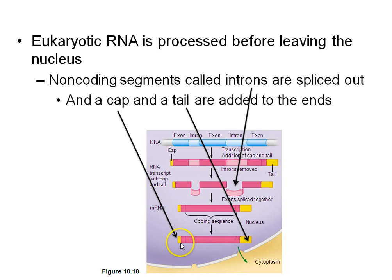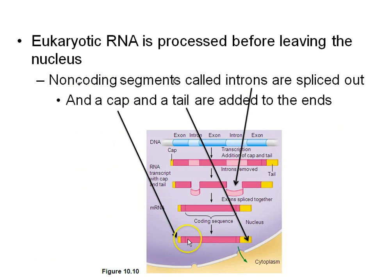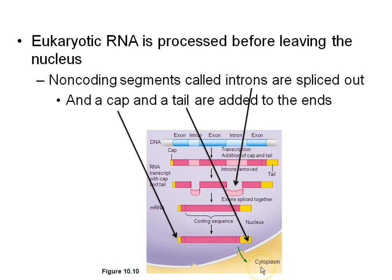In eukaryotes, we're going to add something called a 5' cap and a poly-A tail — a bunch of adenines. This protects the messenger RNA from enzymes that break down RNA. Then the finished RNA will leave the nucleus and enter the cytoplasm, where it will link up to a ribosome.